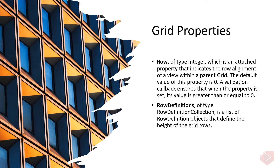Row, of type integer, is an attached property that indicates the row alignment of a view within a parent grid. The default value is zero, and a validation callback ensures its value is greater than or equal to zero. RowDefinitions, of type RowDefinitionCollection, is a list of RowDefinition objects that define the height of the grid rows.